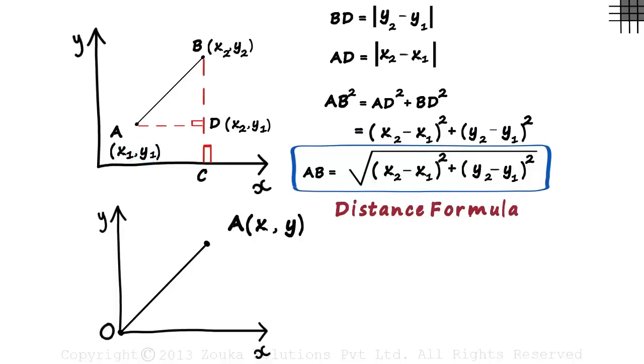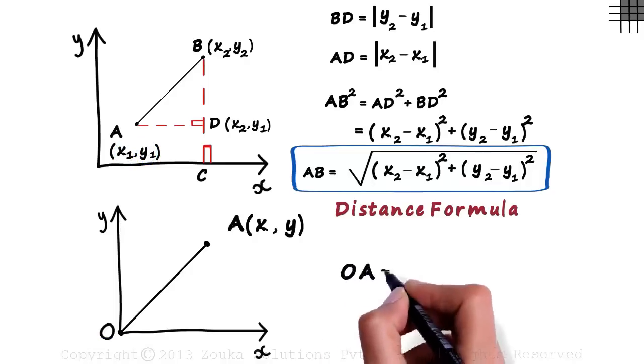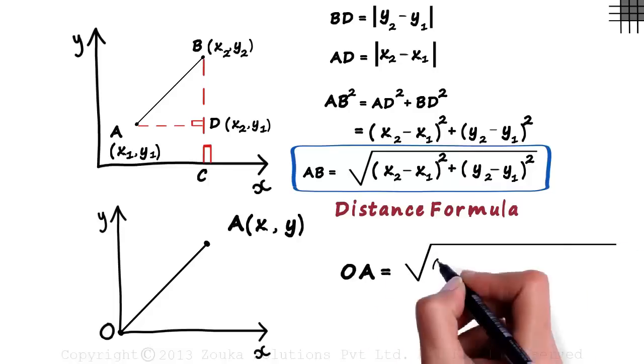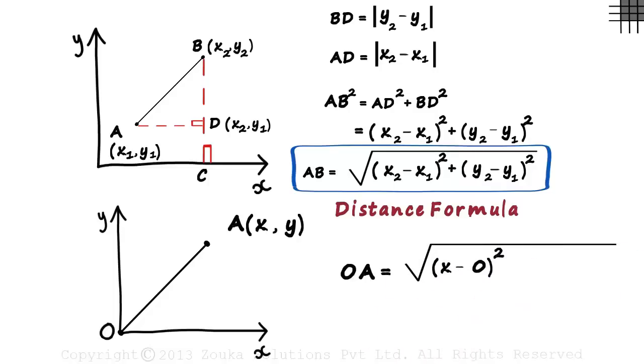So using the distance formula, we get the length of OA as the square root of x minus 0 the whole squared, plus y minus 0 the whole squared. That would equal square root of x squared plus y squared.